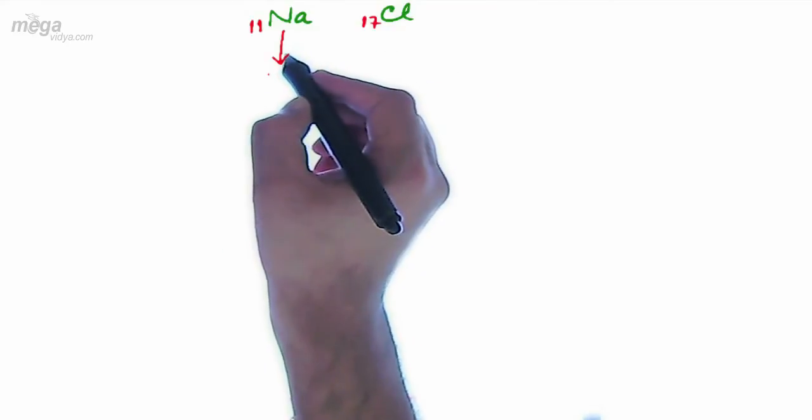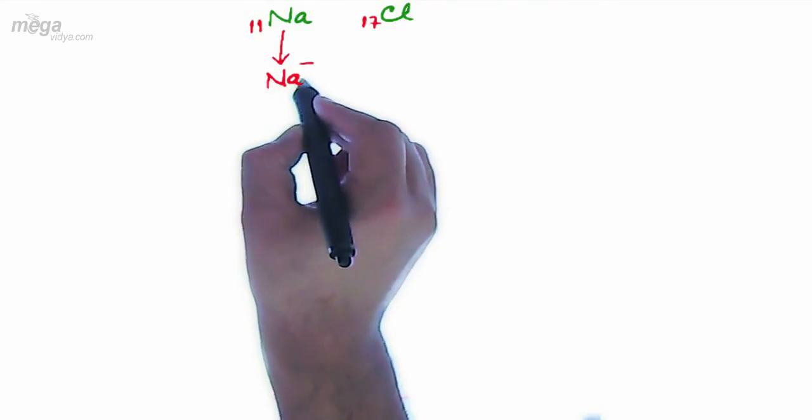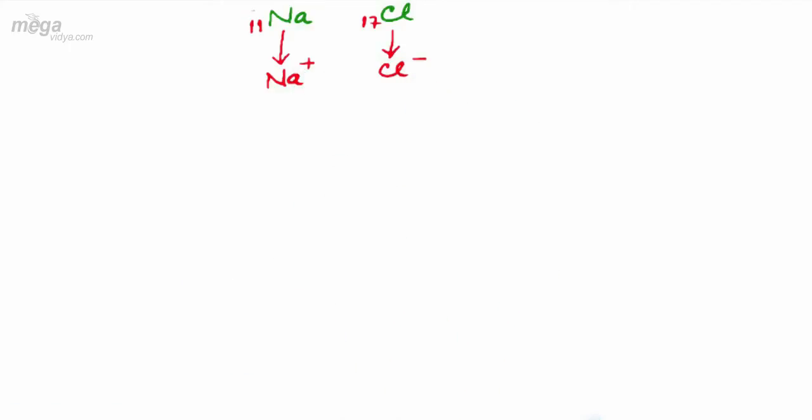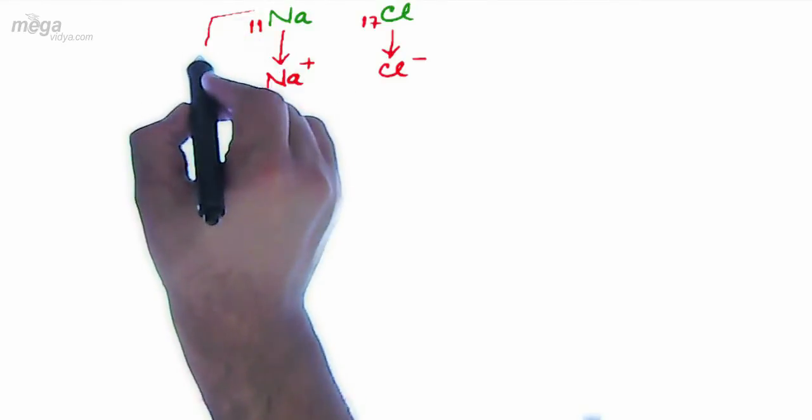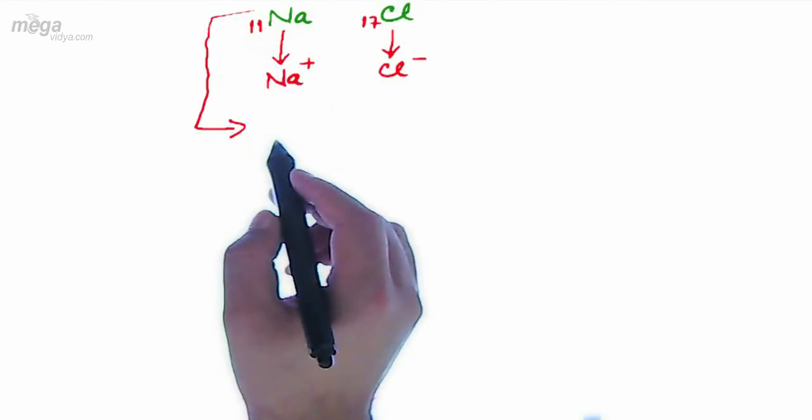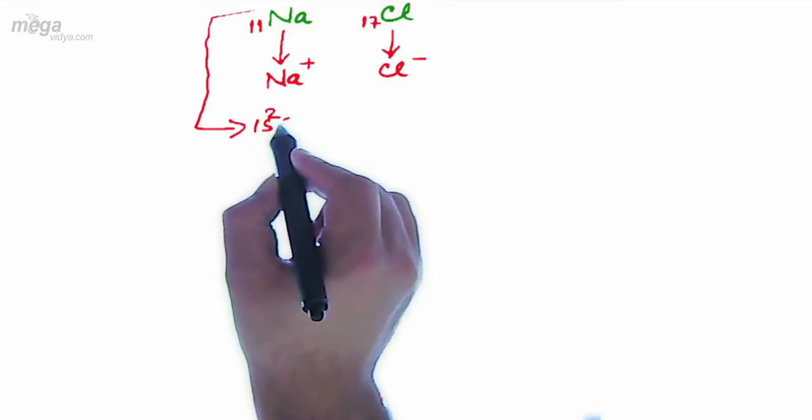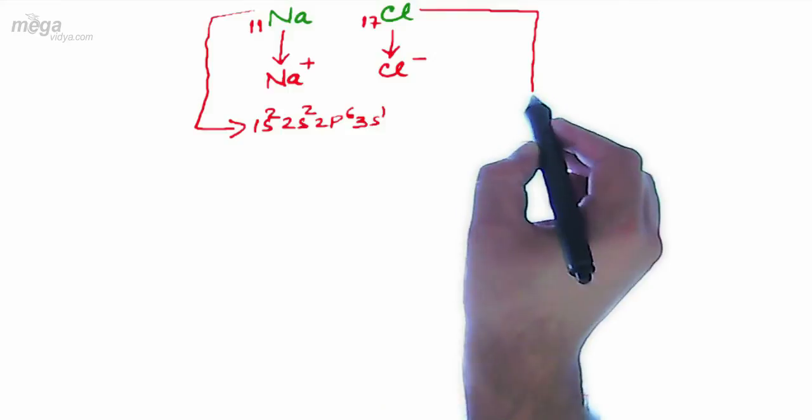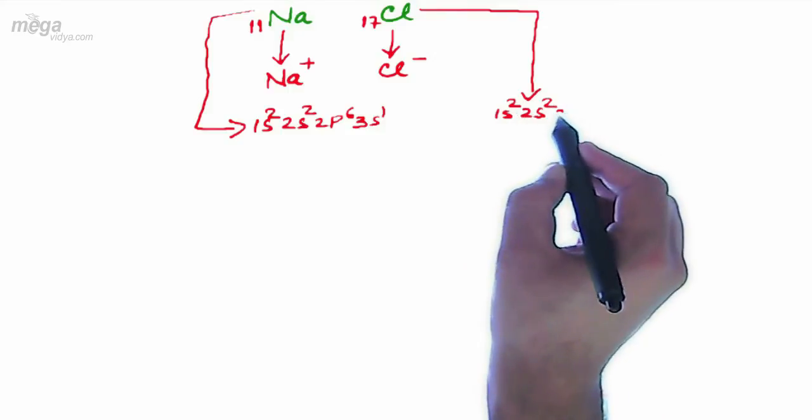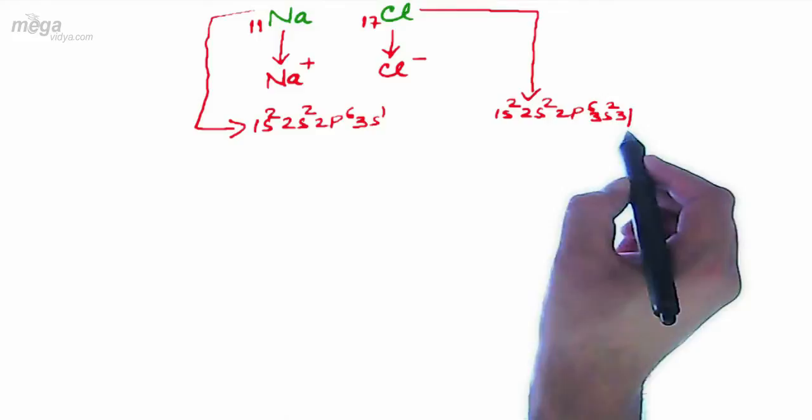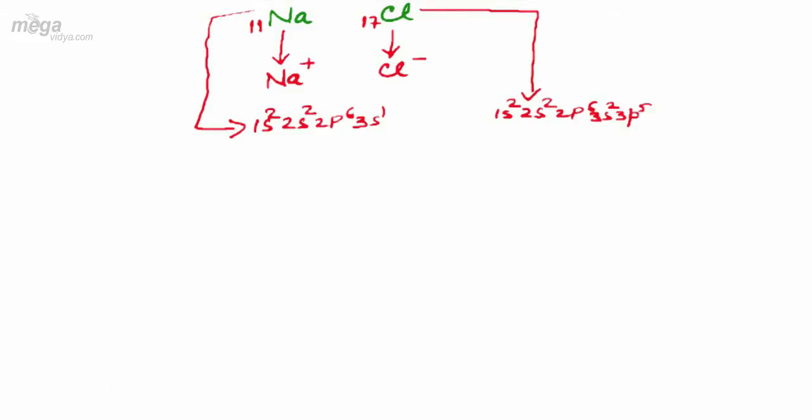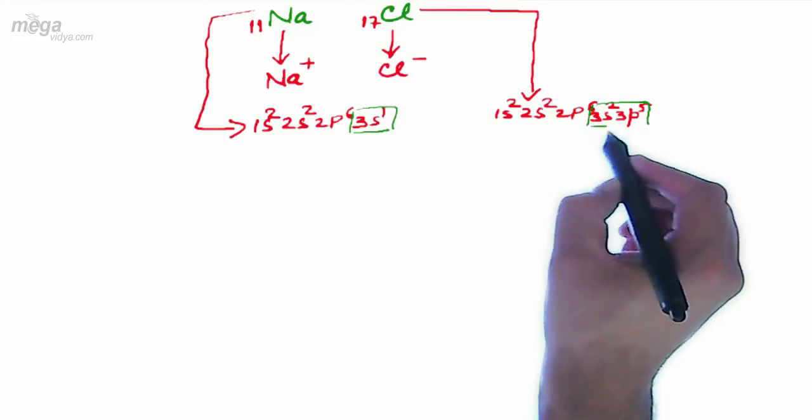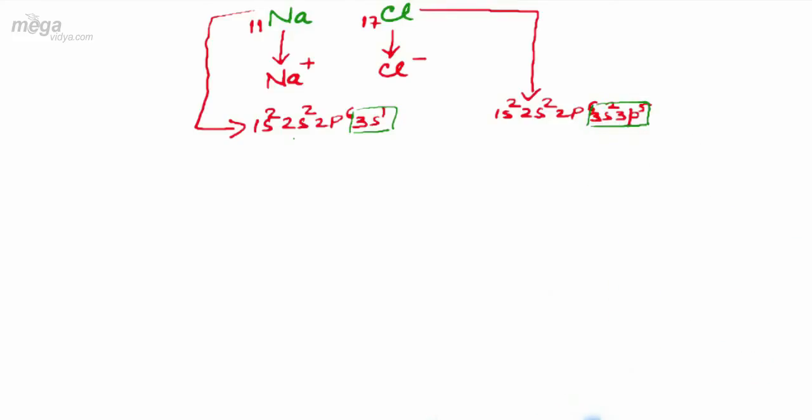Sodium will undergo the loss of one electron forming Na+ and Cl will gain one electron forming Cl-. If we observe the initial configuration of sodium, it is 1s2 2s2 2p6 3s1, whereas that of chlorine is 1s2 2s2 2p6 3s2 3p5. In the valence shell of sodium we have 3s1, whereas we have 3s2 3p5 configuration of chlorine.